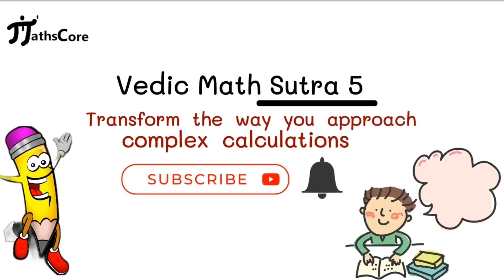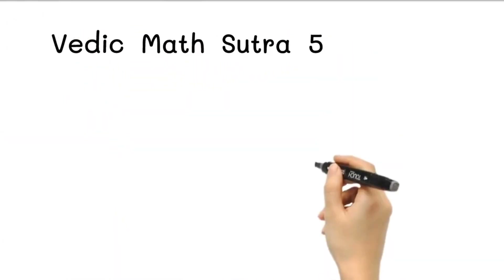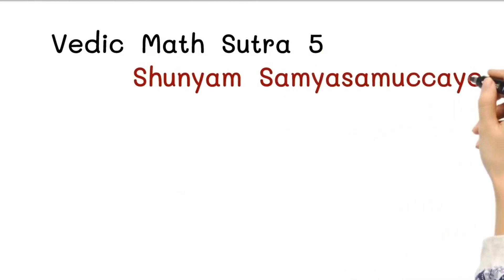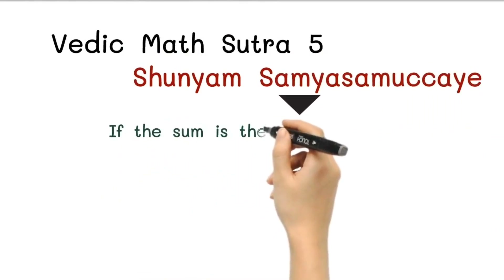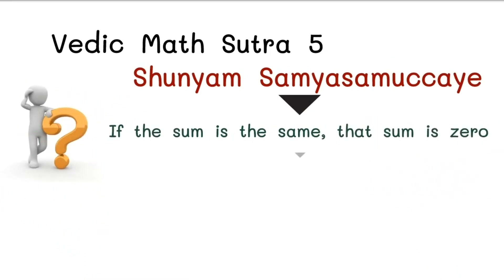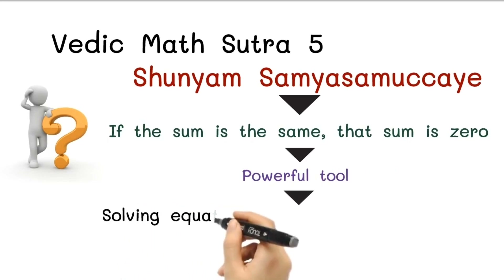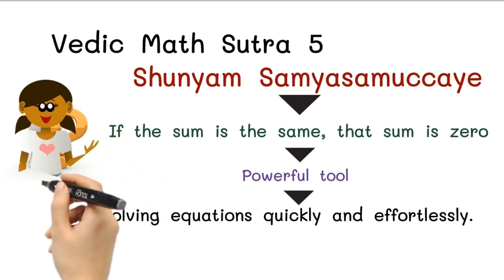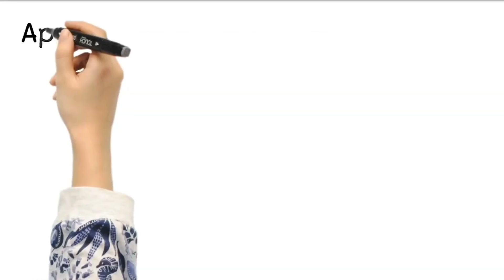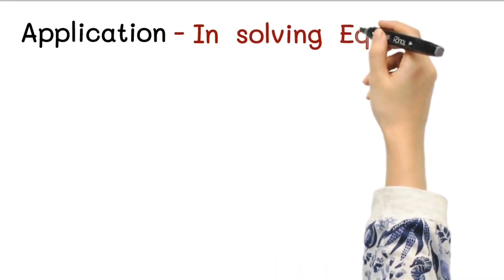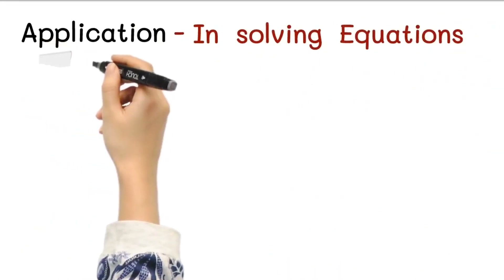Vedic Math Sutra 5 is known as Shunyam Sammya Sammuchaye, which means 'if the sum is the same, that sum is zero.' It sounds intriguing, right? This sutra is a powerful tool for solving equations quickly and effortlessly. Let's break it down and see how it works. This sutra is helpful in solving equations and has different meanings.